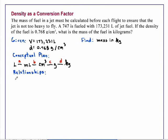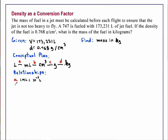Let's list the relationships. The first of these will allow us to convert from liters to milliliters, and we know that we have 1 milliliter equal to 10 to the minus 3 liter.